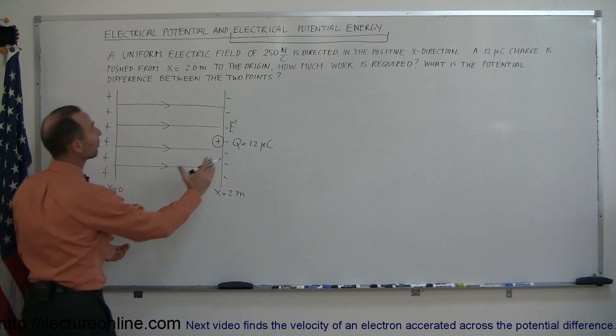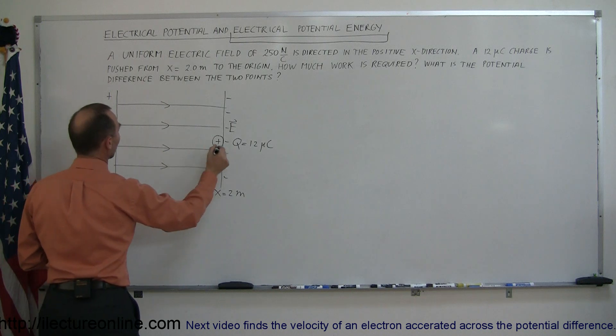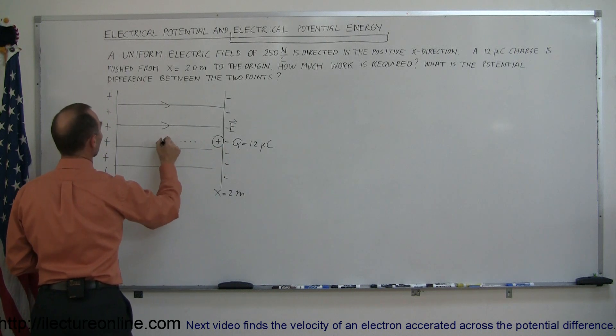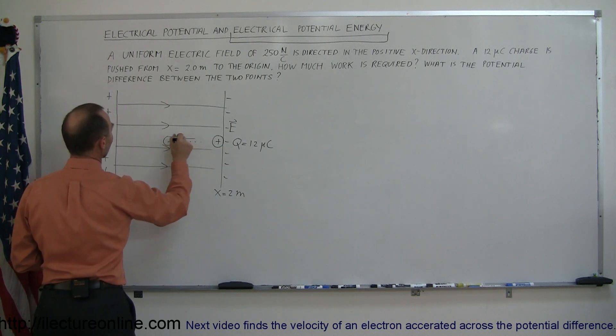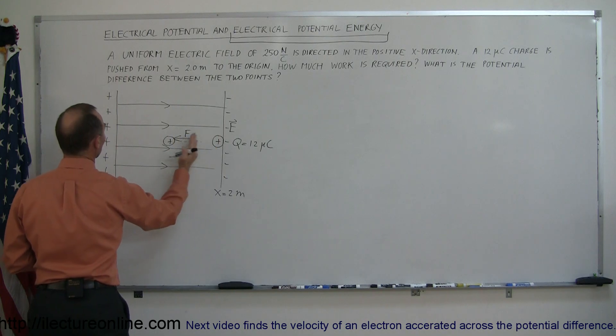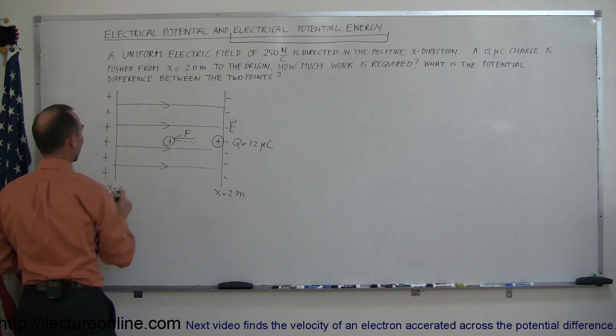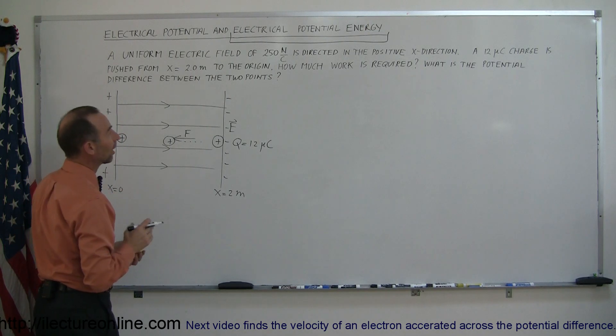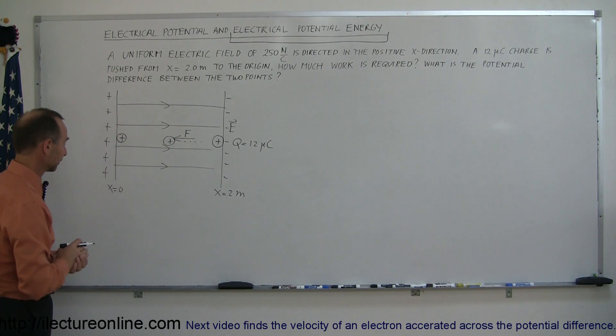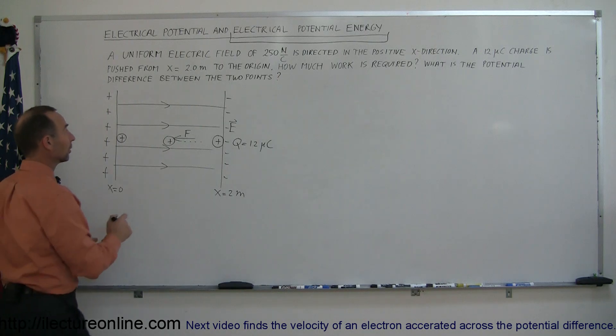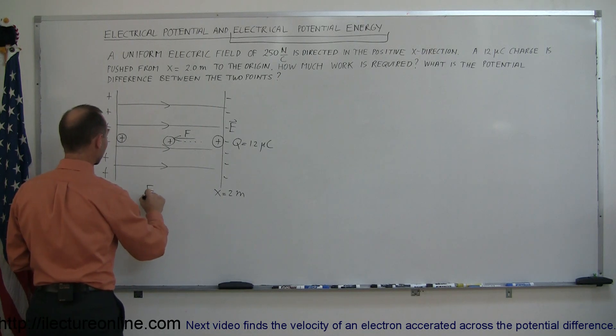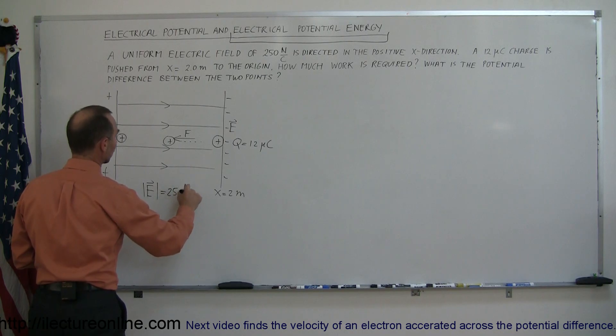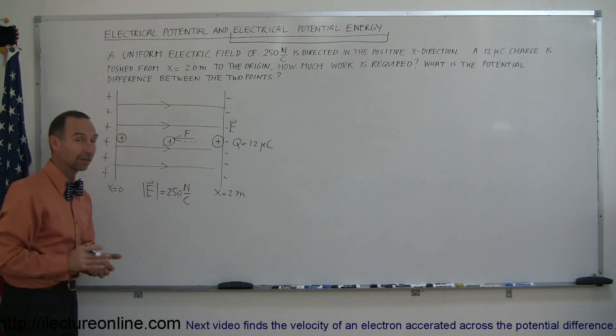And now we're pushing this all the way to the origin. So we're giving it a push with some force F and bringing it all the way over to the other side until we reach the other side at the origin. And the question is how much work is required to do that? Also, let's write down the strength of the electric field. The electric field strength is equal to 250 newtons per coulomb. Alright, so let's go ahead and start.